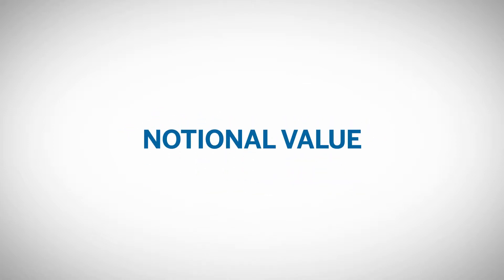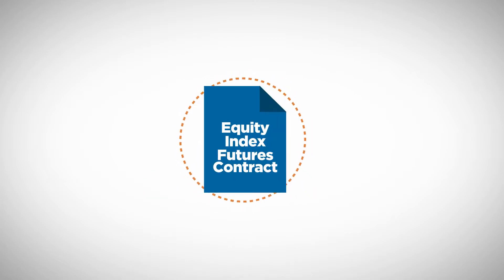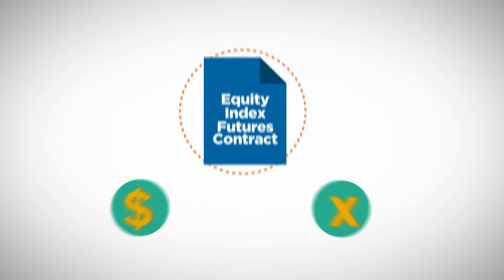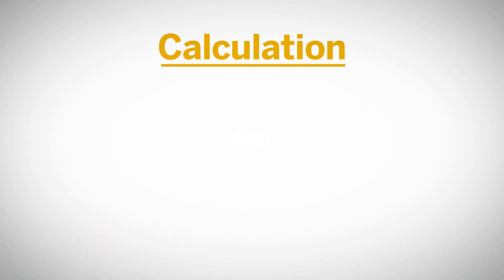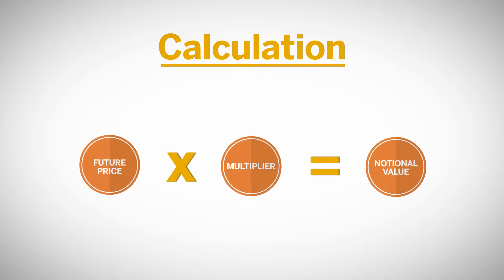Every Equity Index Futures product has its own notional or financial value. For Equity Index Futures, the notional value is based on the futures index price and a fixed multiplier. This calculation may be expressed as: futures price times multiplier equals notional value.